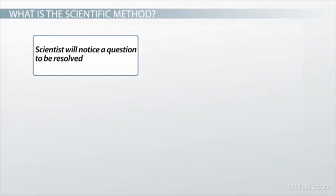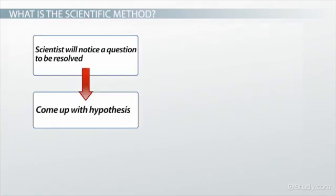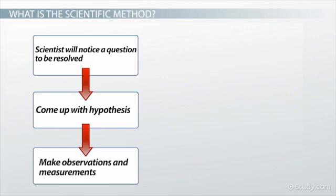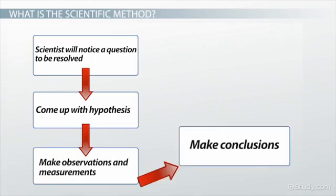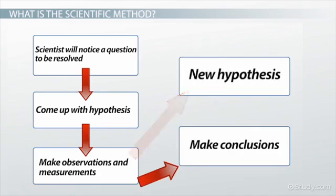In the scientific method, a scientist will notice a question to be resolved, come up with a hypothesis, make observations and measurements to test the hypothesis, and then either make conclusions or come up with a new hypothesis and go back to the data collection stage.